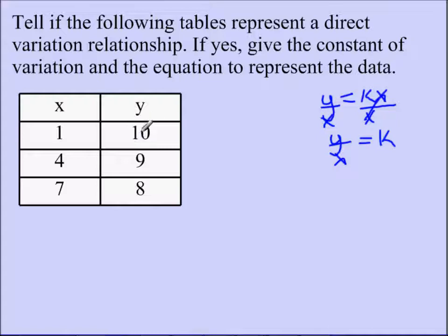Over here, 10 is my y value. Over here, x is 1. That reduces to 10. Now, what I'm interested in is that the other two values will come up to be 10 also. So now, I'm going to do 9, which is y, over 4. Well, this one doesn't reduce down to 10.